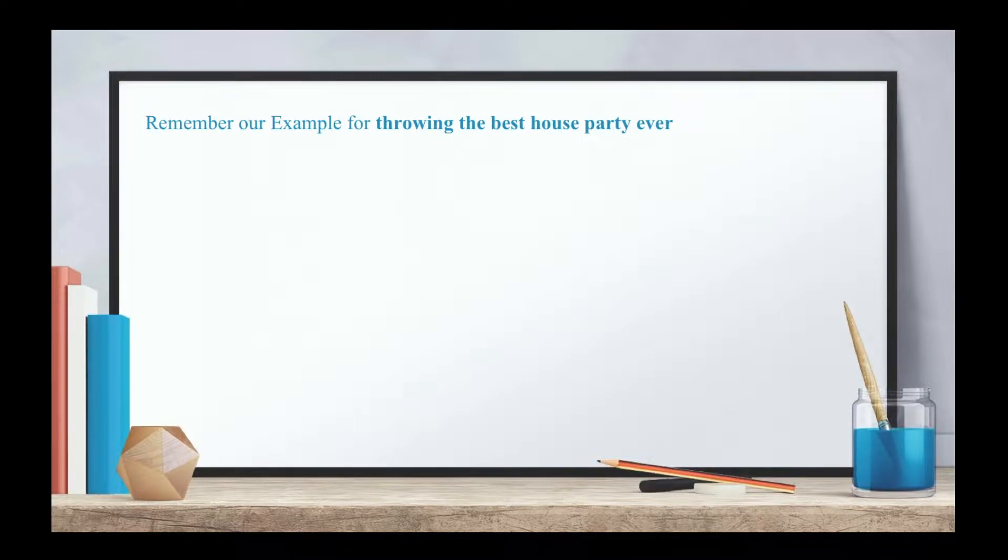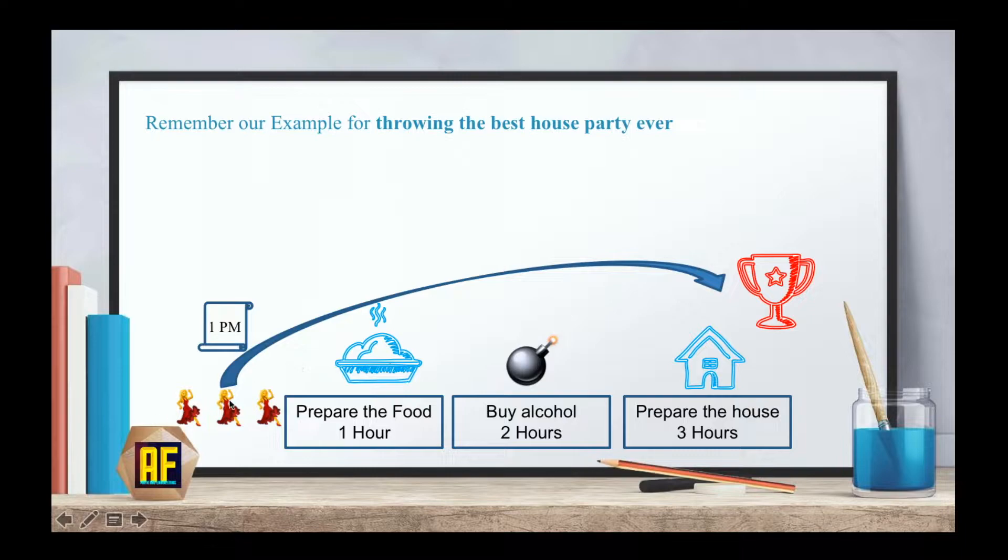Remember our example from the last video for throwing the best house party? We had three ladies and each lady had her own task, and only once all three tasks were completed, the party could begin. We spoke about the fact that this activity was the critical one. Now imagine that there is only one person instead of three.